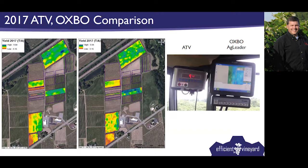We've run both systems simultaneously on our harvester and compared yield maps from blocks on our research farm. Looking at the displays: the ATV gives you a data logger showing spatial data and a running total, but no instantaneous yield. The Oxbow system feeds directly into Ag Leader and the Ag Leader SMS software on your field computer.